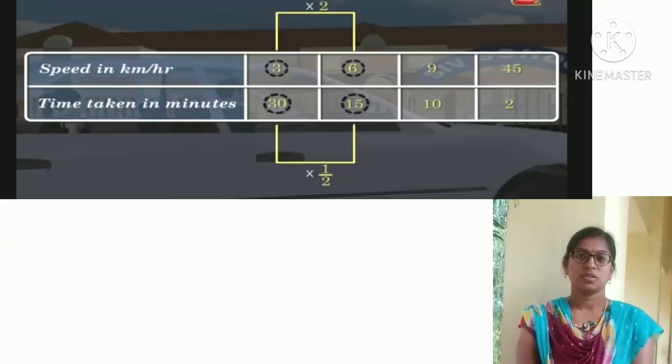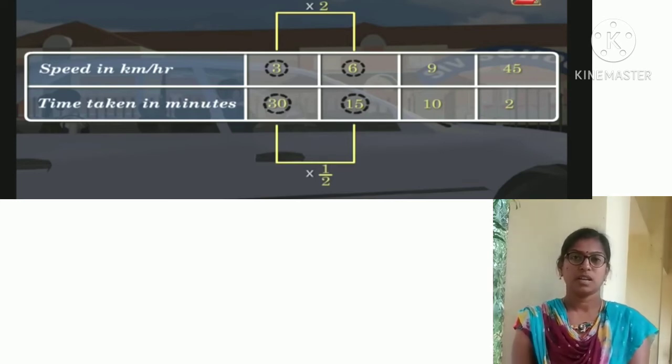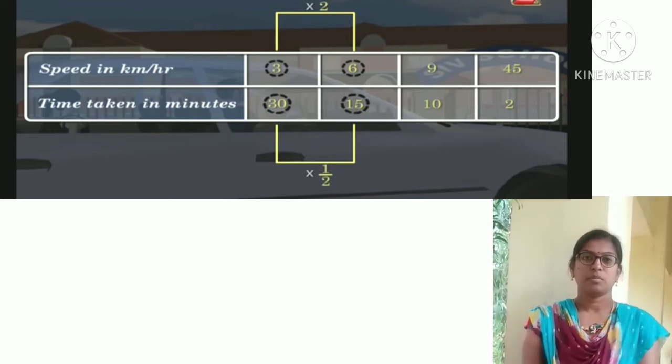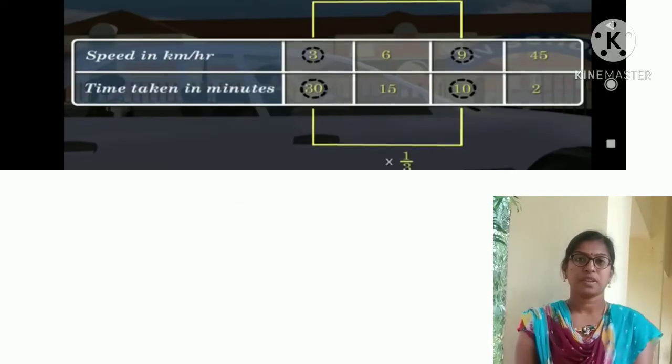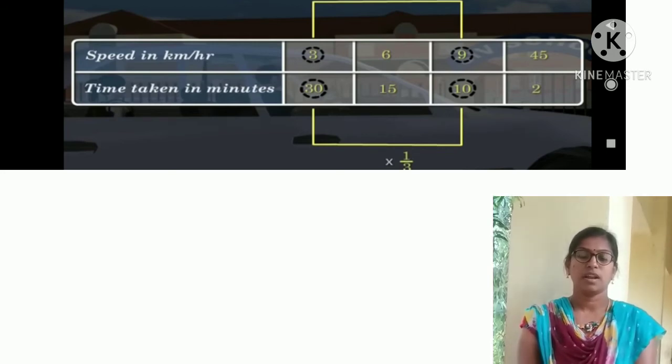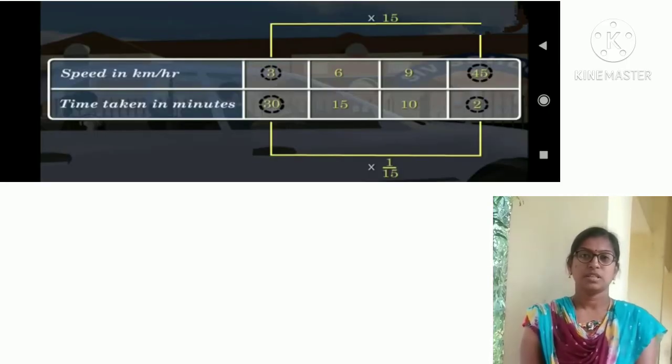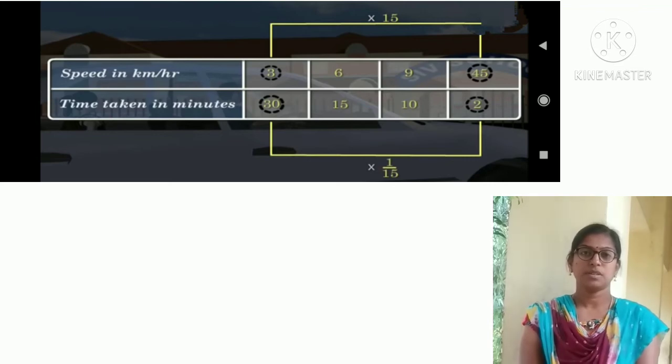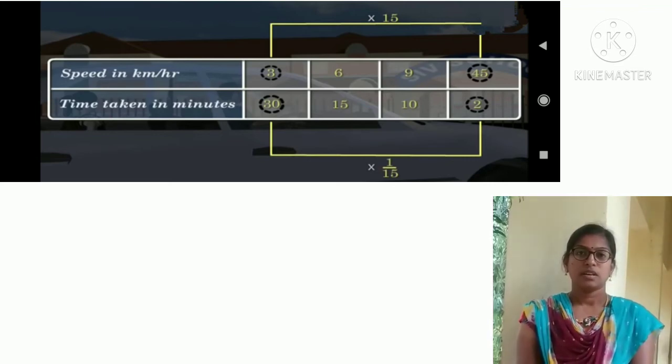So we see that when she increases her speed 2 times the normal speed, the time taken decreases by half. If speed is increased by 3 times, time taken decreases by 1/3. And if speed is increased by 15 times, then time taken decreases by 1/15.